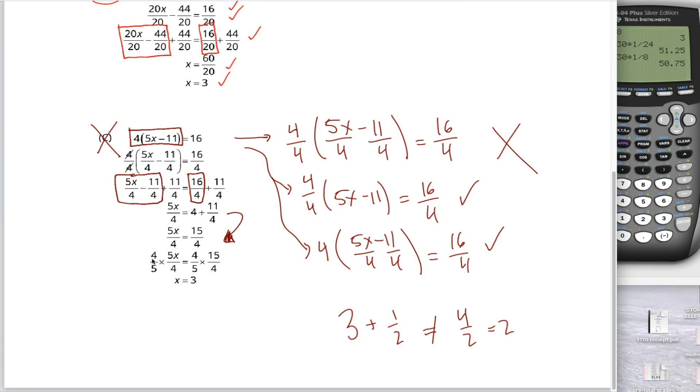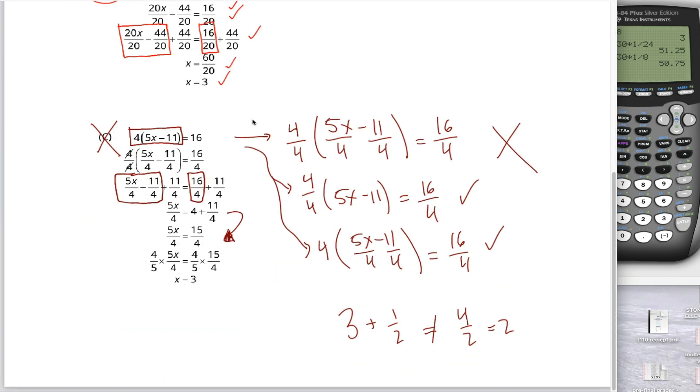Everything else is fine. If we want to get this x by itself, we can do this multiply by the reciprocal trick, multiply both sides of the equation by 4 fifths. This 4 and this 4 cancel. This 5 and this 5 cancel. I'm left with just an x. And on the right side of the equation, this 4 and this 4 cancel. I have 15 over 5, aka 3. No mistakes from this line to this line. Oh, that sucked. Yeah, I told you I didn't like this.